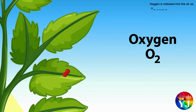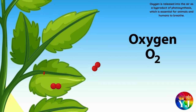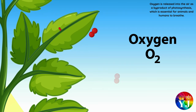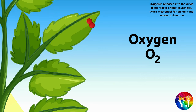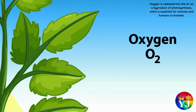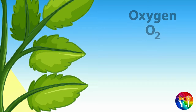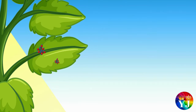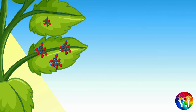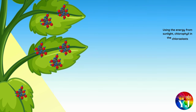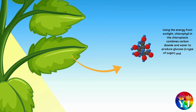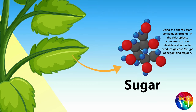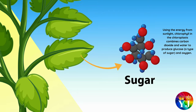Oxygen is released into the air as a by-product of photosynthesis, which is essential for animals and humans to breathe. Using the energy from sunlight, chlorophyll in the chloroplasts combines carbon dioxide and water to produce glucose, a type of sugar, and oxygen.